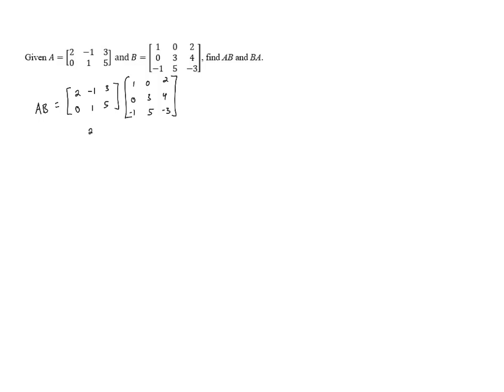So A is a 2 by 3 matrix, and B is a 3 by 3 matrix. We know that we can multiply these because the number of columns in the first matrix equals the number of rows in the second matrix, and our resulting matrix will have dimensions 2 by 3. So we know that we can set up a 2 by 3 matrix for the result. And to figure out the entries in our resultant matrix, we need to take the inner products of the rows of the first matrix with the columns of the second.